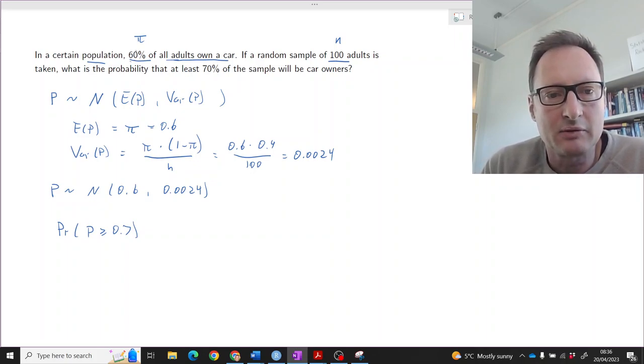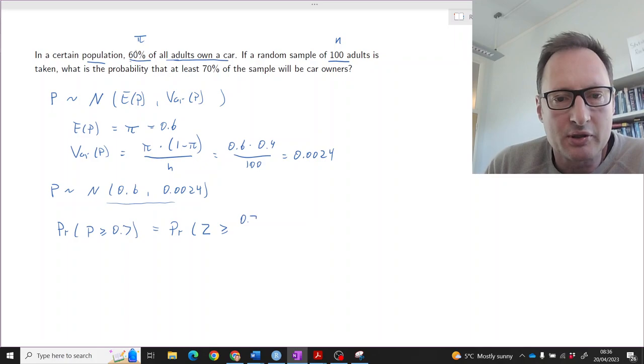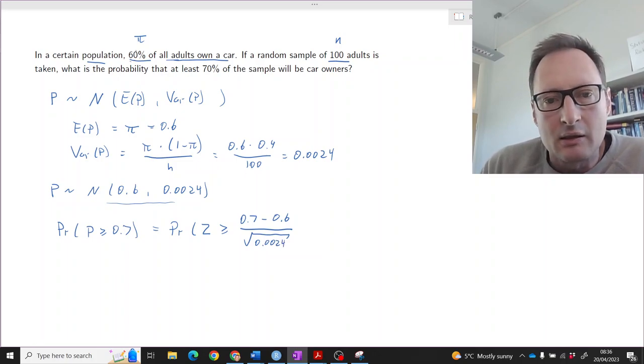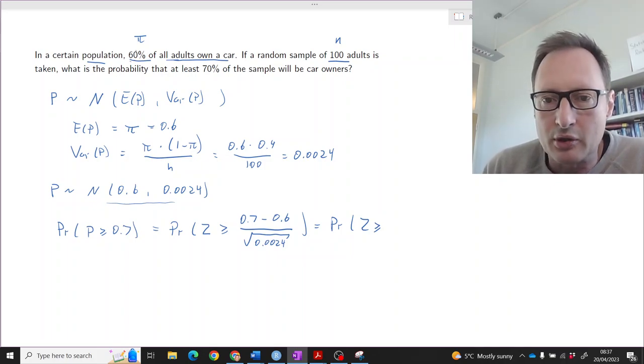We don't have a table for this particular distribution, so we need to standardize. That's the same as the probability that the standard normal distribution Z is larger or equal to 0.7 minus the expected value, which is 0.6, divided by the standard deviation, which is the square root of 0.0024. We can calculate what that is, that's the probability that Z is larger or equal to 2.04.